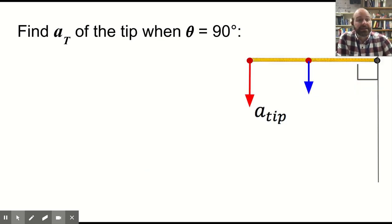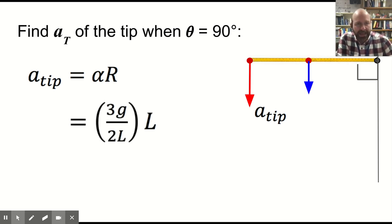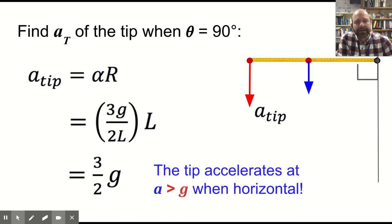We can also find the acceleration of the tip. This would be the tangential acceleration, the linear acceleration translational of the tip. That's alpha times R, where R is the length of the meter stick, and that's just 3 halves g, and that is a big deal.